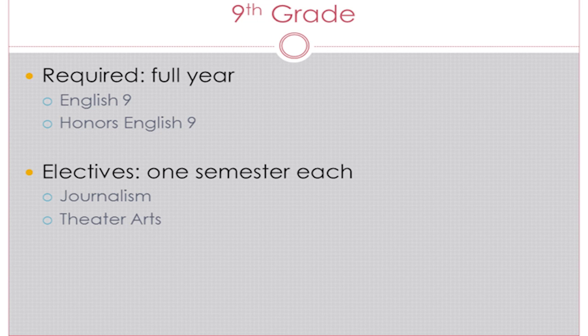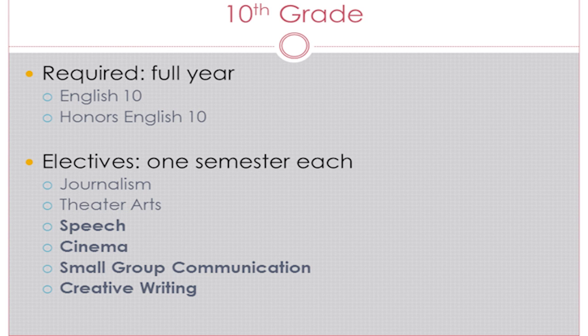To register for ninth grade, you need to register for either a full year of English 9 or honors English 9. Honors moves at a faster pace with a more rigorous curriculum, and students who select it should be looking for an intellectual challenge. You may also select one of two semester-long electives: journalism, which is a writing-based class, and theater arts.